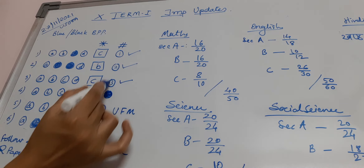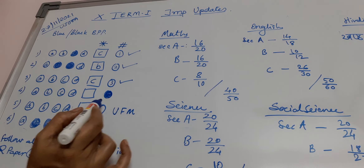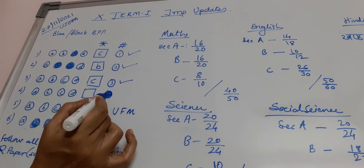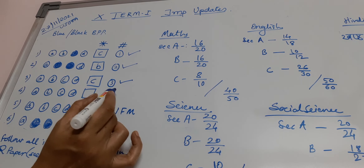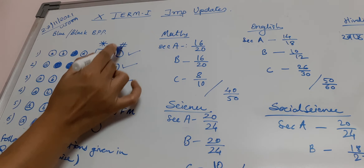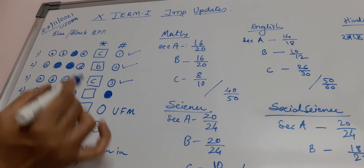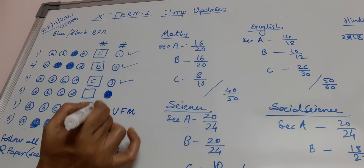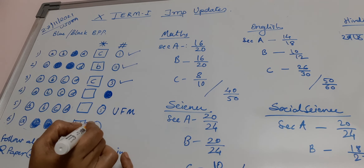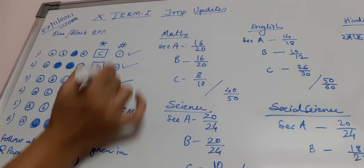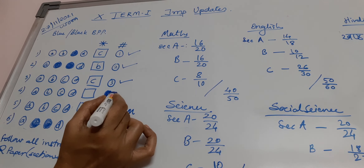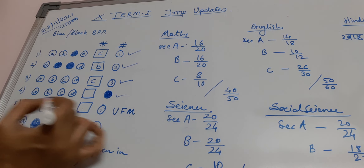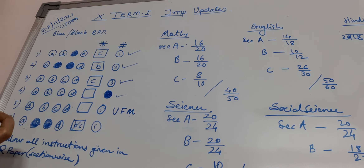Now if you don't want to attempt any question, you have to darken the question number which is given in the hash column. These represent the question numbers. This is also the correct way.